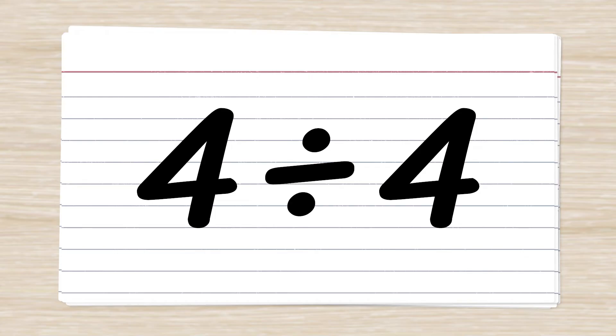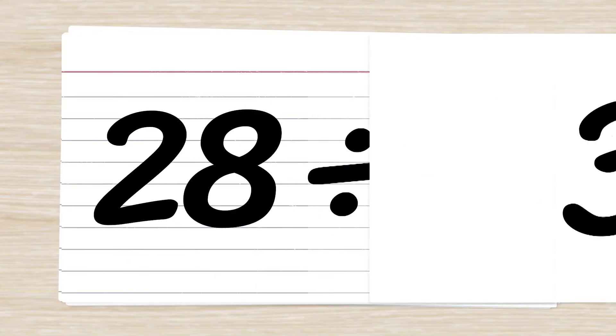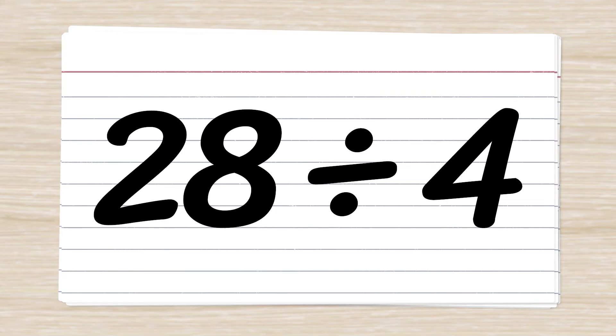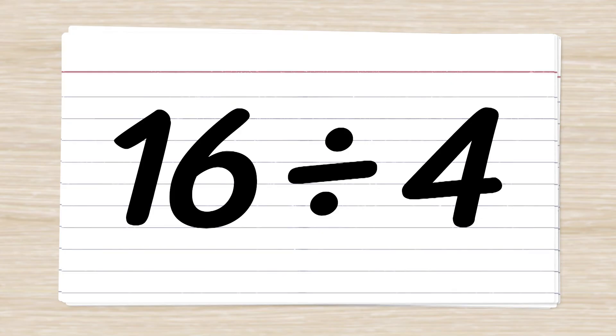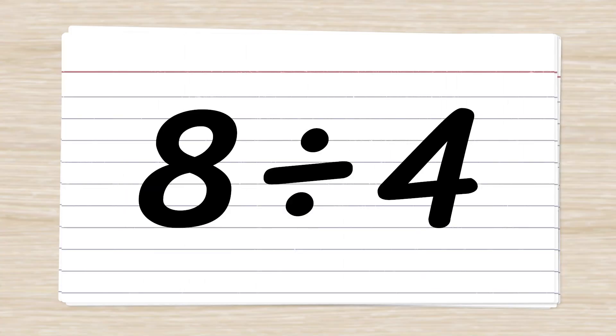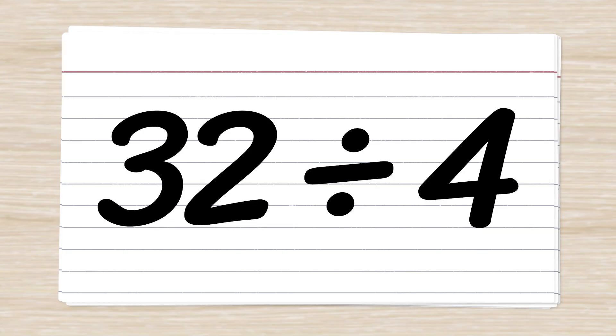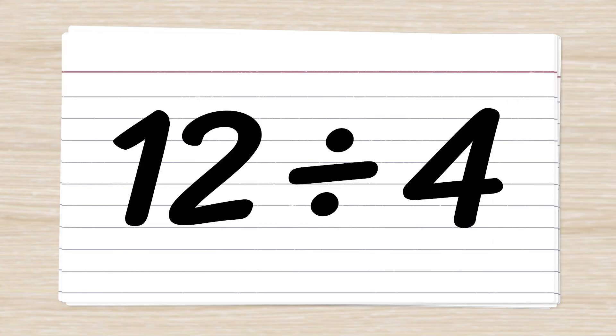Four divided by four. One. 12 divided by four. Three. 28 divided by four. Seven. 16 divided by four. Four. 36 divided by four. Nine. Eight divided by four. Two. 32 divided by four. Eight. 20 divided by four. Eight. 20 divided by four.